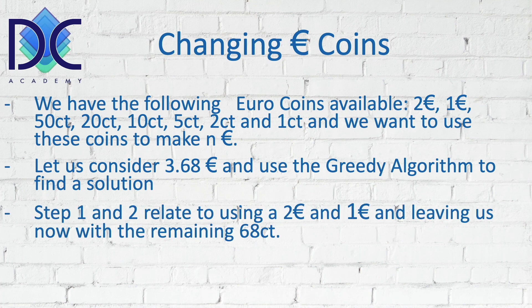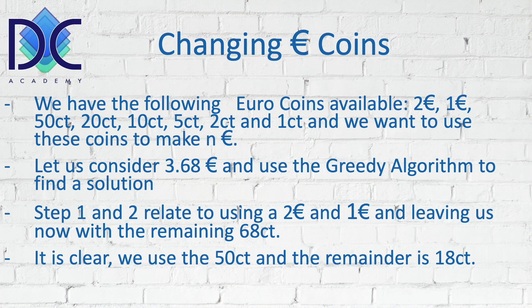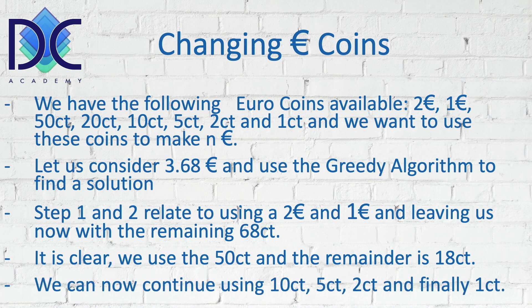First, we look at steps 1 and 2, where we use 2 euro and 1 euro. Now we still have to account for 68 euro cent. We can use the 50 cents, which gives us a remainder of 18 cents. Then we find the 10 cents, leaving 8. The next steps are 5 cents, 2 cents, and finally 1 cent. So basically, we have: 2 euro, 1 euro, 50 cents, 10 cents, 5 cents, 2 cents, and 1 cent — that is 7 coins to make this amount.